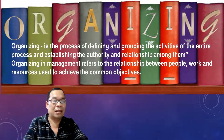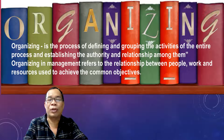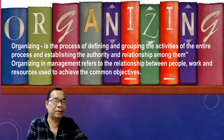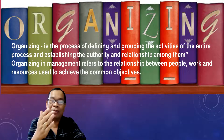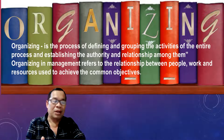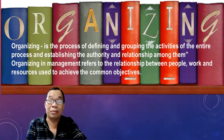Let's talk about organizing. Organizing is the process of defining and grouping the activities of the entire process and establishing authority and relationships among them. Organizing in management refers to the relationship between people, work, and resources used to achieve common objectives. Organizing is a function of management which follows planning. After planning, we now tend to organize. It is a function of management which involves the synchronization and combination of human, physical, and financial resources. Money and resources — these three are very important to get results.